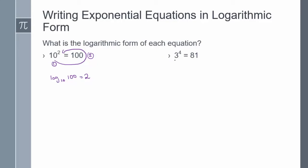Here's another example, again following the steps. Step one: the base of my exponent is the base of my log. What my exponential form is equal to is what my log is. And the power of my exponential form is what the log is equal to. So 3 to the power of 4 equals 81 can be written as log base 3 of 81 equals 4.